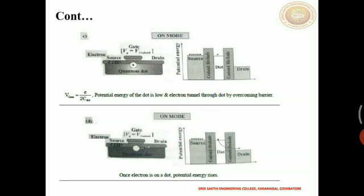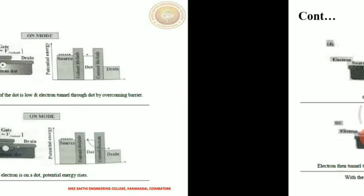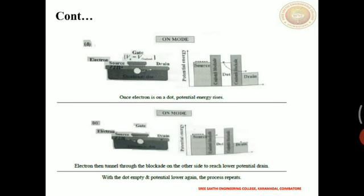As shown in figure C, once the electron gains its energy in the dot, it tunnels through the lower potential energy side, which is the drain, as shown in figure D. Finally, the electron moves from source through the dot to the drain. When the dot becomes empty, it automatically receives an electron from the source, gains higher potential energy, and again transfers its energy to the lower side drain. This process continues like a cycle.